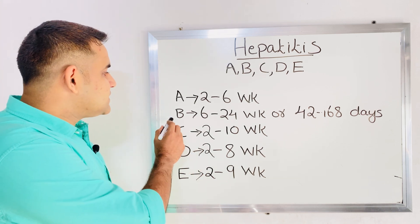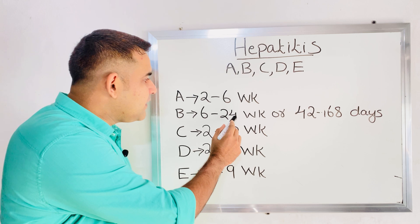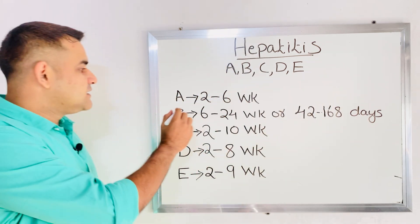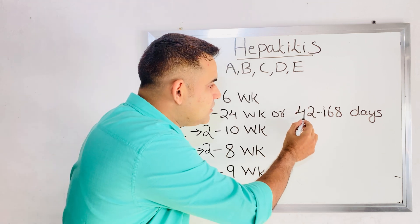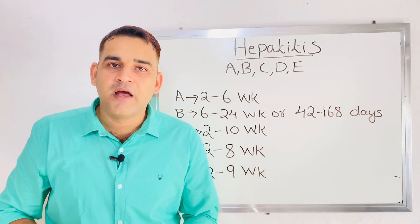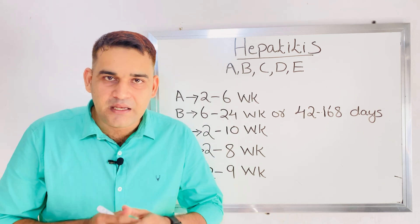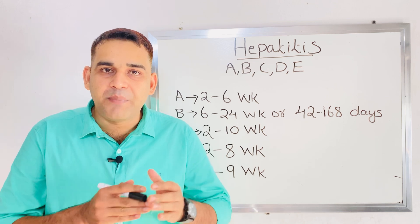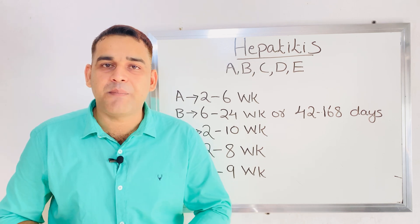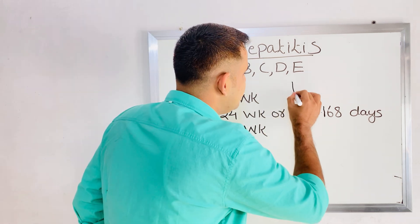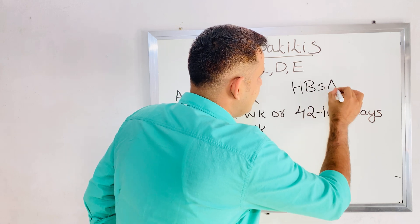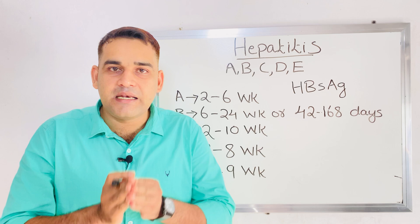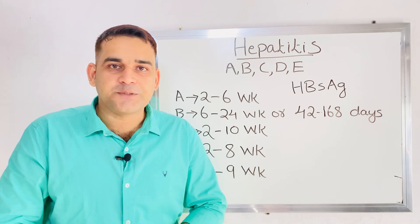Regarding the incubation period of hepatitis B, that is very important — they repeatedly ask this question. It is 6 to 24 weeks, or in days, 42 to 168 days. If a person is hepatitis B positive, the antigen present in their body is hepatitis B surface antigen, also known as HBsAg.